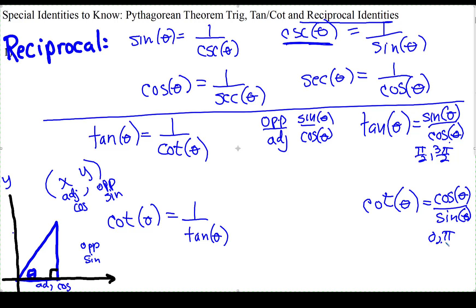Alright, same with secant and cosecant. When sine is zero, cosecant will have an asymptote, and for secant, when cosine is zero, so at pi halves and 3 pi halves, secant will also have an asymptote.